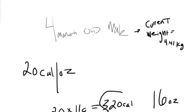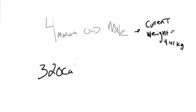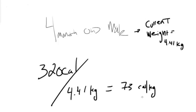If you want to find out how much that is per kilogram, then you just divide that by his weight. So 320 calories divided by 4.41 kilograms equals 73 calories per kilogram per day.